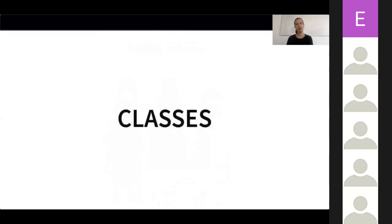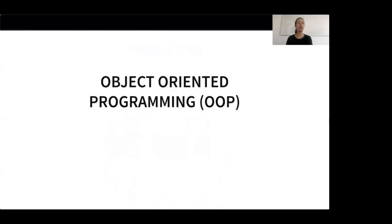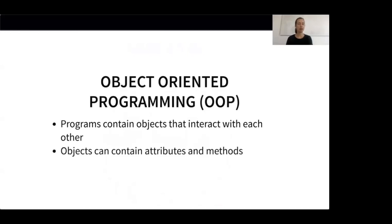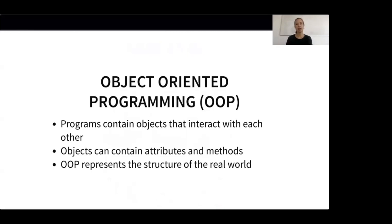To get started with our universe, we first have to talk about classes. Using classes in coding is tightly coupled to the concept of object-oriented programming. In this concept, programs are designed by creating objects that interact with each other, and where each object can contain attributes and methods. Object-oriented programming can be used to represent the structure of the real world. We have lots of classes and instances of these classes — for example, we have the class Person and lots of individual persons who are instances of the Person class.